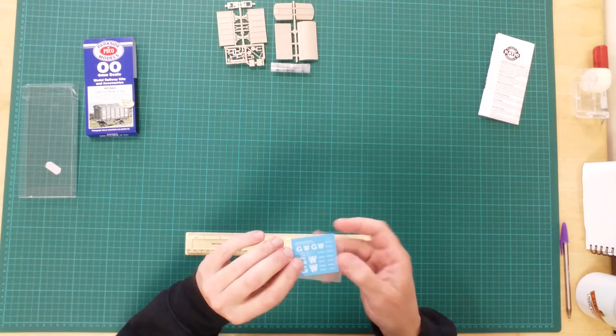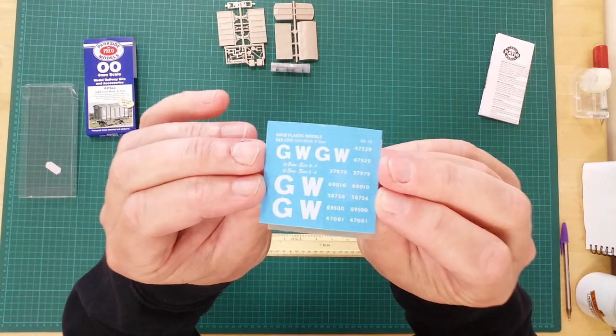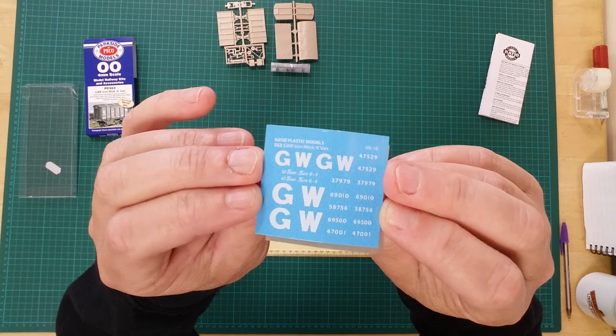There is also a small decal sheet with appropriate markings for GWR rolling stock.